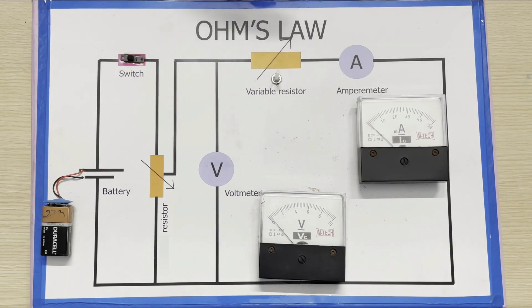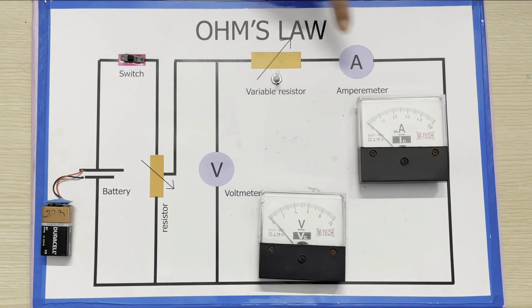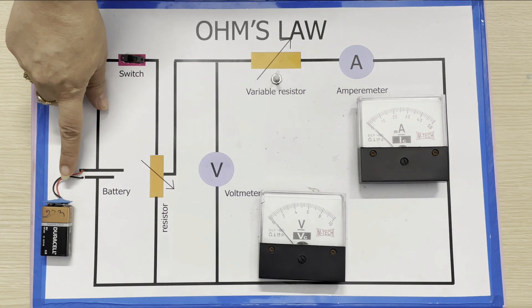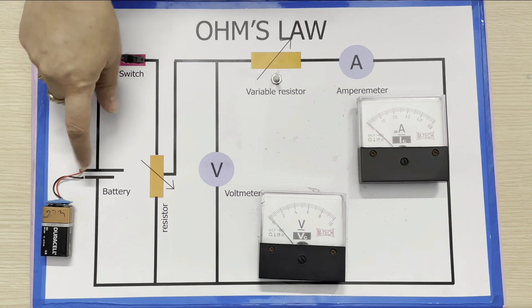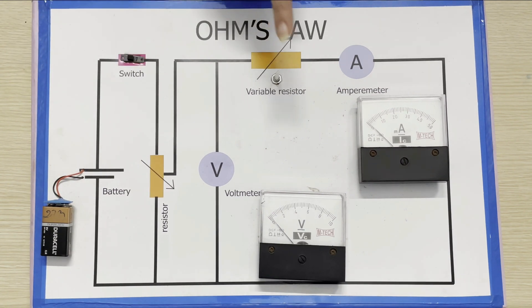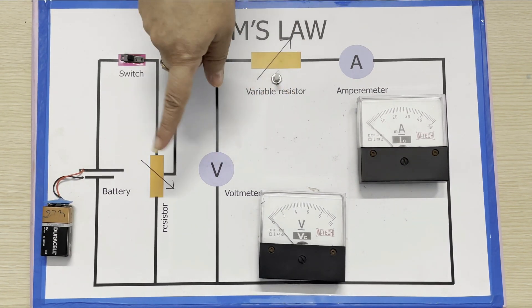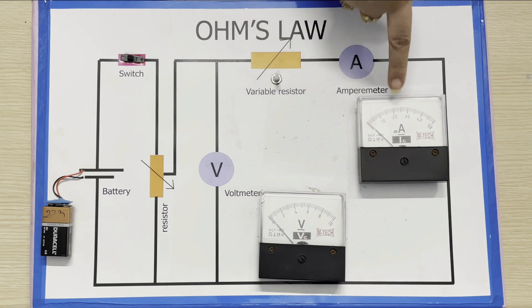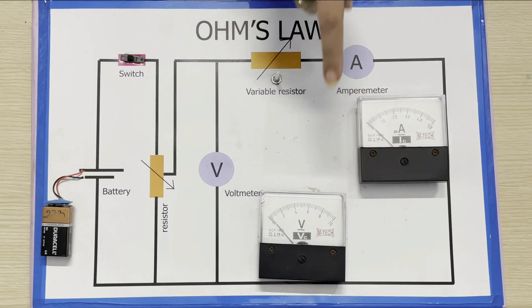To demonstrate Ohm's law, I have made this circuit here. A rheostat — that is, a variable resistance — is here. An ammeter A and a resistor wire R are connected in series with battery B, taking care that the positive terminal of ammeter A is towards the positive terminal of the battery. The voltmeter V is then connected in parallel across the resistance wire.